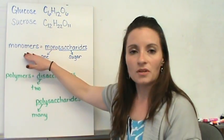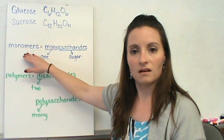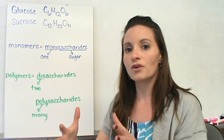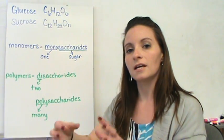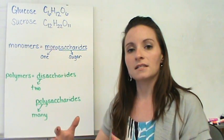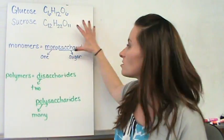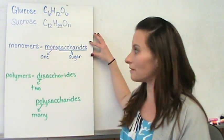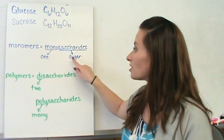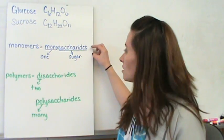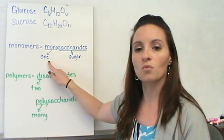We know that monomers are the single units of all organic compounds. That single train car is the monomer. The monomer of a carbohydrate is known as a monosaccharide—one sugar. A saccharide is another word for sugar, so a monosaccharide is one sugar.